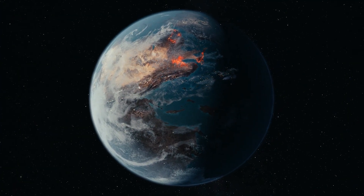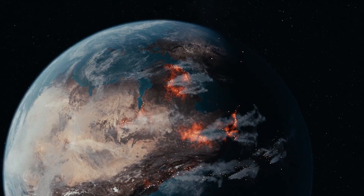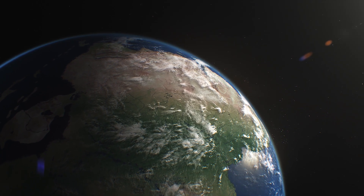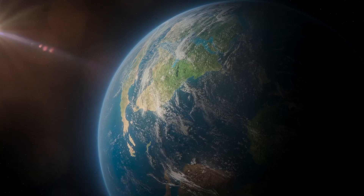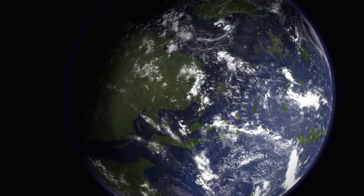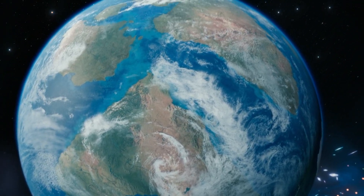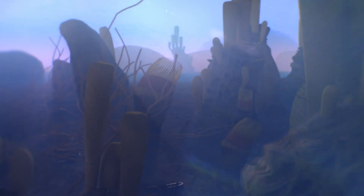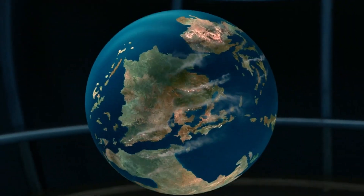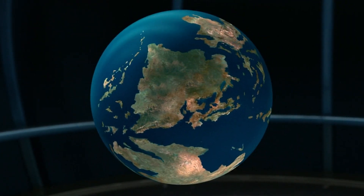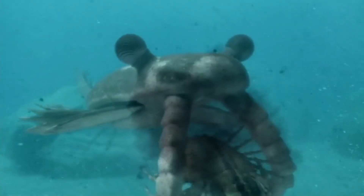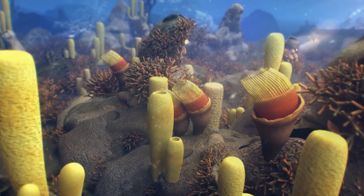The Earth during the Cambrian period looked very different from the world we know today. In the Southern Hemisphere lay the massive continent of Gondwana, while just to its north sat three other major landmasses: Laurentia, Baltica, and Siberia. Temperatures across these lands were generally warm, averaging somewhere between 72 and 77 degrees Fahrenheit. There were no polar ice caps, and winters only brought a mild drop in temperature. In a world that felt more like a giant greenhouse, it's no surprise that life took off and flourished at such an incredible pace.